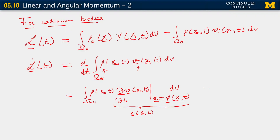This is our formula for the rate of change of linear momentum of a continuum body. We can also write it using the acceleration. Recalling that the product rho dv is dm — the elemental mass — we see our connection here with the rate of change of linear momentum of a particle. We've essentially got the rate of change of momentum of every elemental mass dm, written as that mass dm times its acceleration, integrated over the body to collect all the mass.